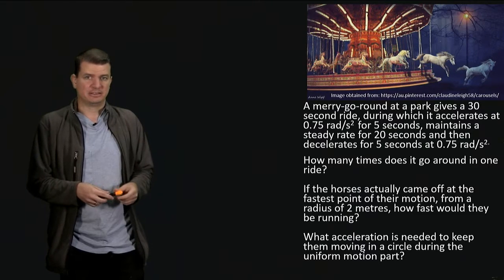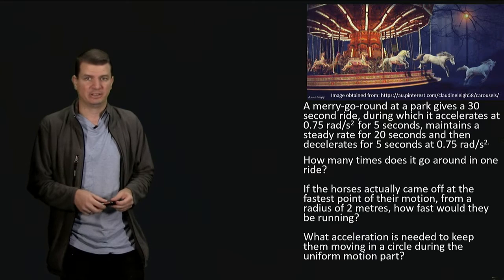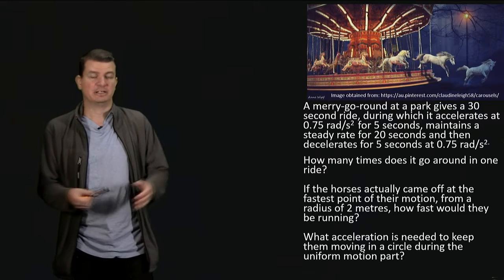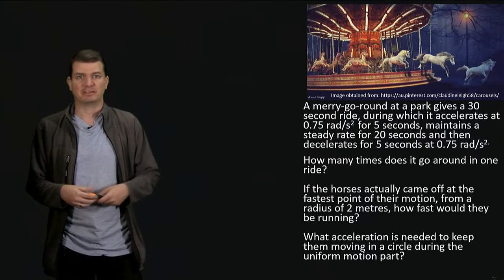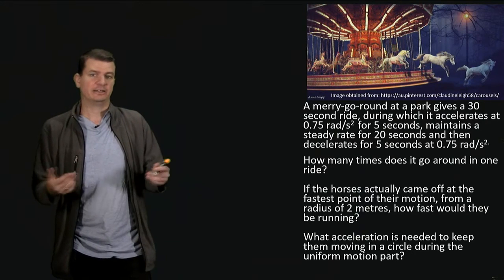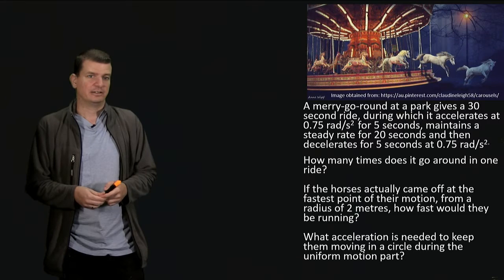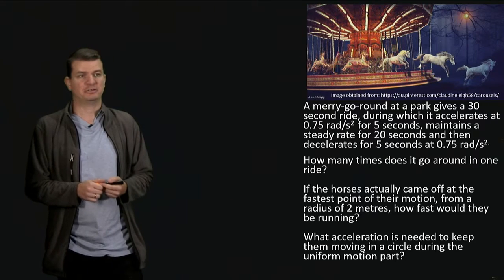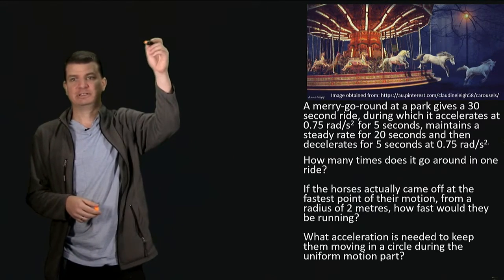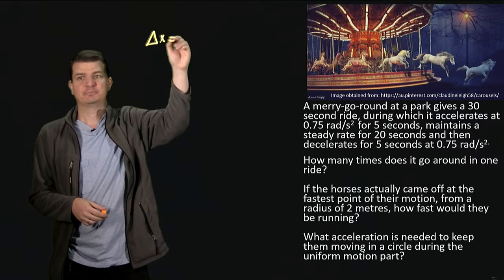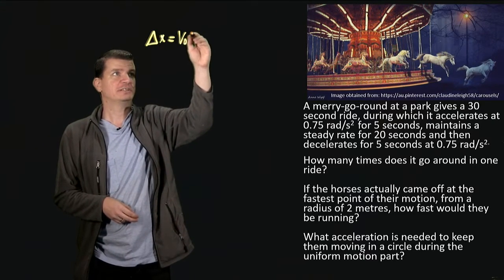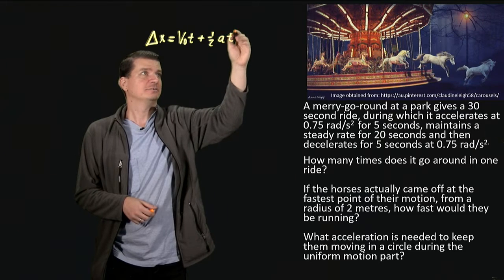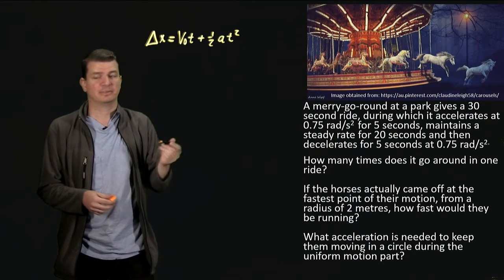This is exactly like a linear problem. If I replace the carousel with a car that accelerates at some rate for five seconds, cruises steadily for 20 seconds, and then decelerates for the next five seconds, most of you would agree that's a pretty easy linear kinematics problem. I would find the displacement using delta x equals initial velocity times time plus one-half a t squared.